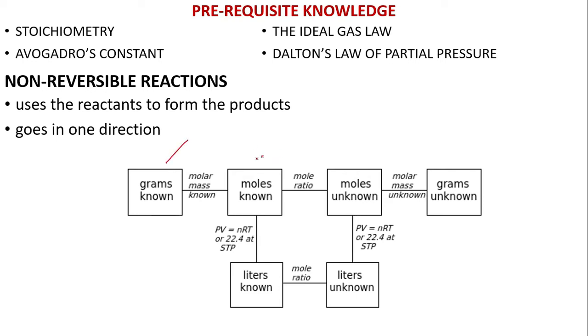So what's new here: from grams you can get moles by using the molar mass. To get from moles A to moles B, you use the mole ratio. To get the grams of the unknown or moles B, use the molar mass. In some cases, you have to use the ideal gas law PV=nRT, or the molar volume 22.4 liters at STP. Then you will get the liters. From liters, you can also use the mole ratio to get the liters of the unknown.